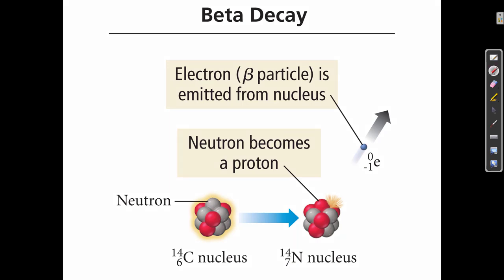We can draw a nuclear equation showing what's really happening. The notation is: one-zero is a neutron, one-one is a proton, and zero-minus-one is an electron.